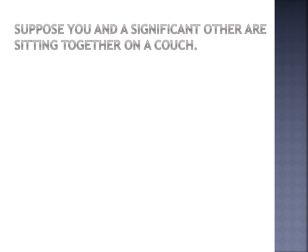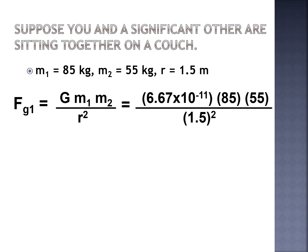For the next example: suppose you and your significant other are sitting on the couch and they slide closer, saying anything with mass has a gravitational attraction to any other mass. Let's actually calculate the force of gravity between two people — one with mass 85 kg, the other 55 kg, sitting 1.5 meters apart. Using F = G × m₁ × m₂ / r², that's 6.67 × 10⁻¹¹ × 85 × 55 / 1.5², giving 1.39 × 10⁻⁷ newtons.